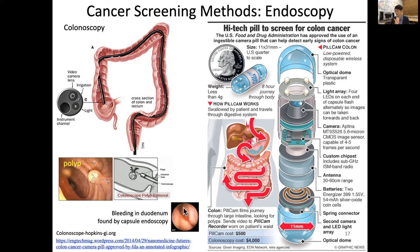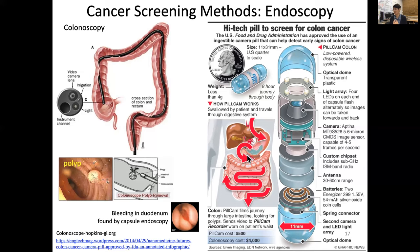Here is an example of when the capsule endoscope is useful. A patient detected bleeding in their stool, suggesting internal bleeding, but the colonoscope found nothing. In that case, the capsule endoscope — entering through the patient's mouth — can travel through and identify the bleeding source. In this example, bleeding was found in the duodenum inside the small intestine, showing how useful this device can be.